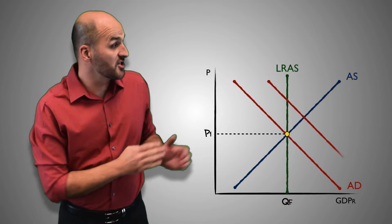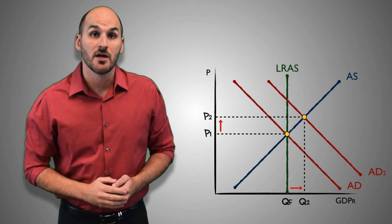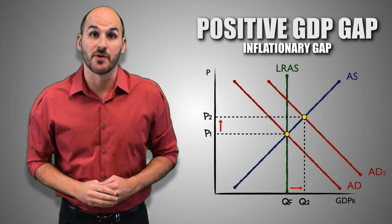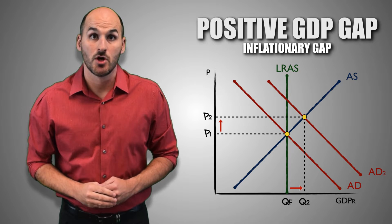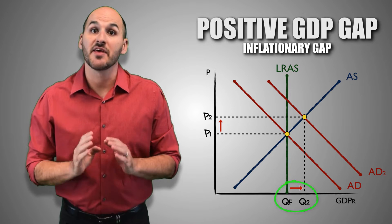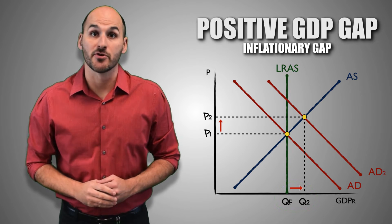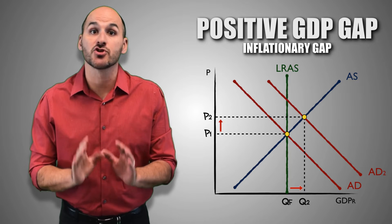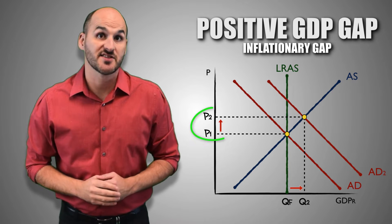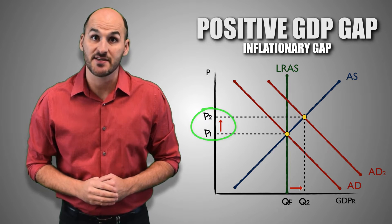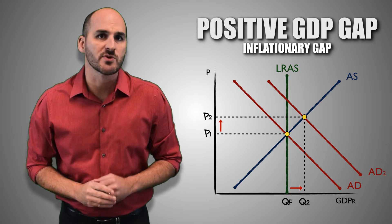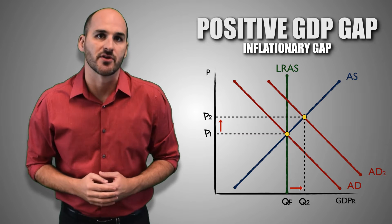When aggregate demand is too high, the economy will experience an inflationary gap. Real GDP will expand, and the economy will be producing output at too fast a rate, causing excessive inflation of prices and meaning it's harder for consumers to meet their utility.